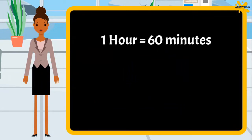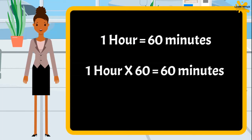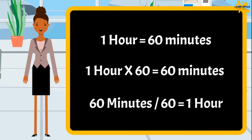1 hour is equal to 60 minutes. So if you multiply a value in hours by 60, you get the value in minutes. And if you divide the value in minutes by 60, you get the value in hours.